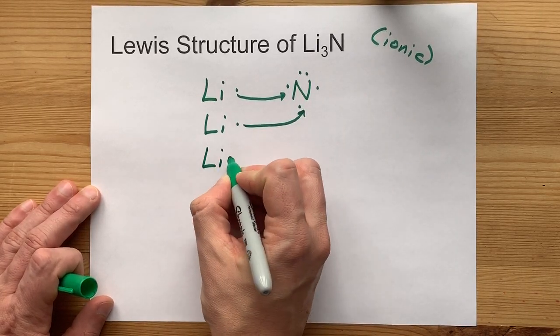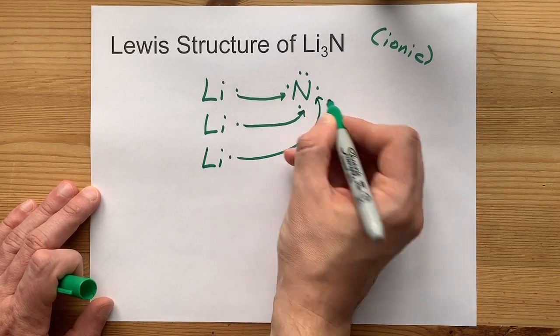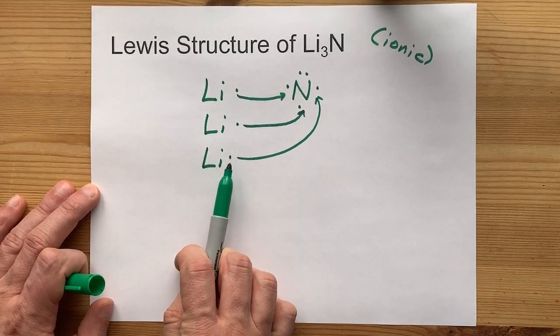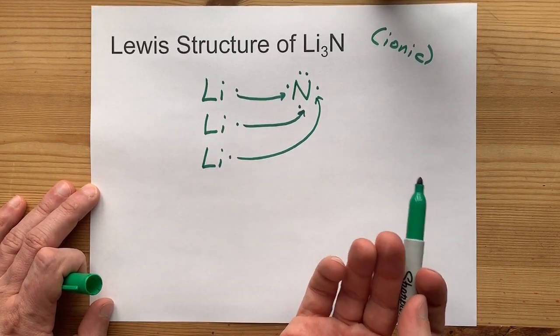We're going to need to build in another lithium. Now, that nitrogen has a full eight electrons, but it required three lithiums to give up one electron each.